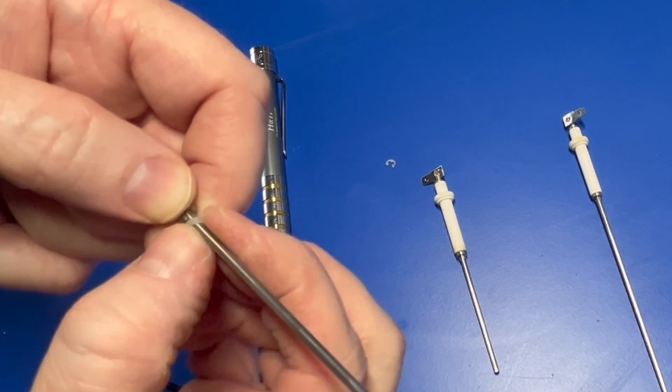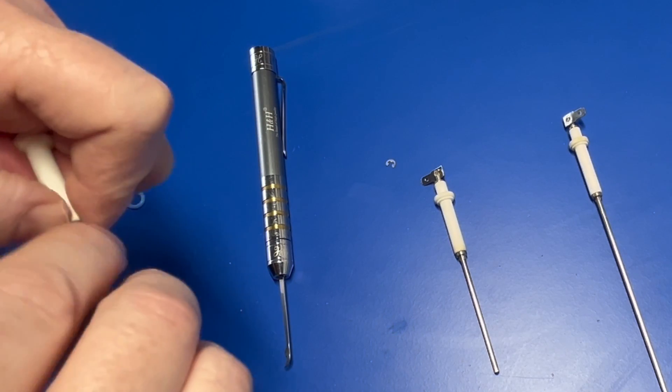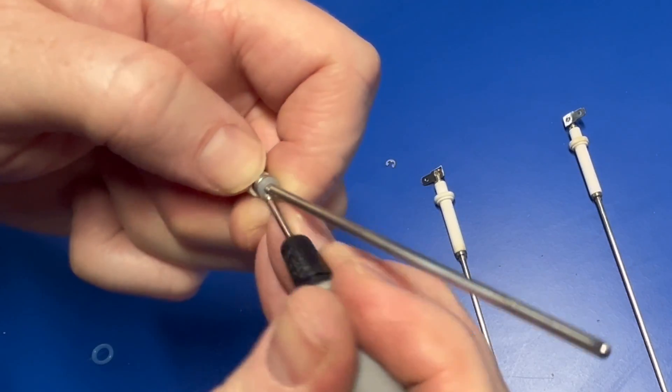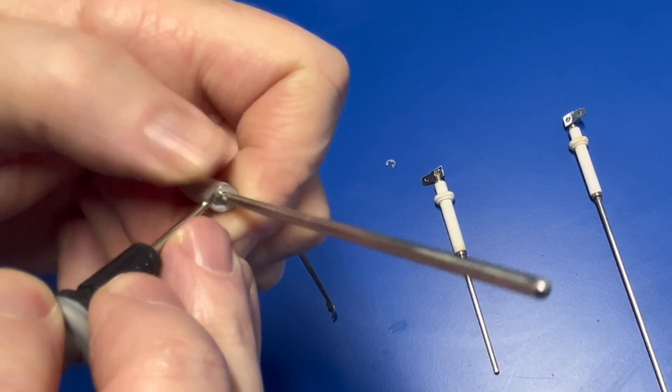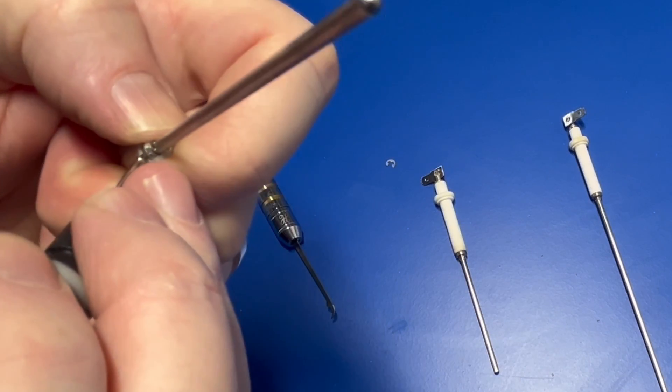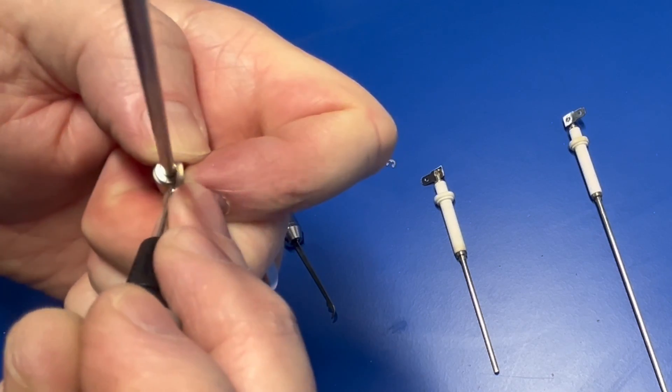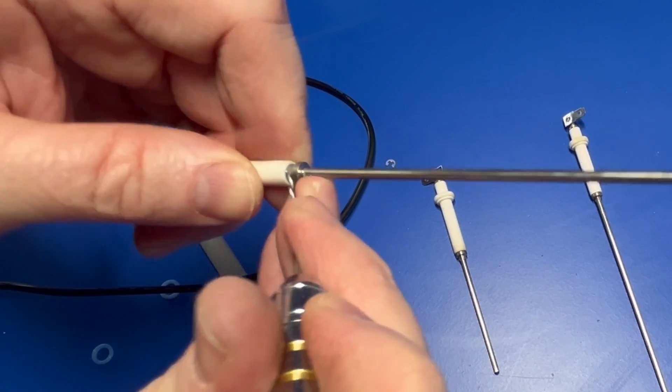Slide on the replacement o-ring—I'll leave a link to these in the description—then carefully stretch it over that metal collar and into place. Once it's over, use the tip of a small screwdriver to make sure it's sitting inside of the housing.